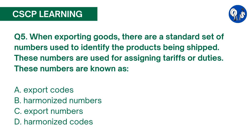Question number 5. When exporting goods, there are standard set of numbers used to identify the products being shipped. These numbers are used for assigning tariffs or duties. These numbers are known as: A. Export Codes, B. Harmonized Numbers, C. Export Numbers, D. Harmonized Codes. The correct answer is D. Harmonized Codes are used by exporters to help facilitate the import of goods into foreign countries. They are maintained by the World Customs Organization.